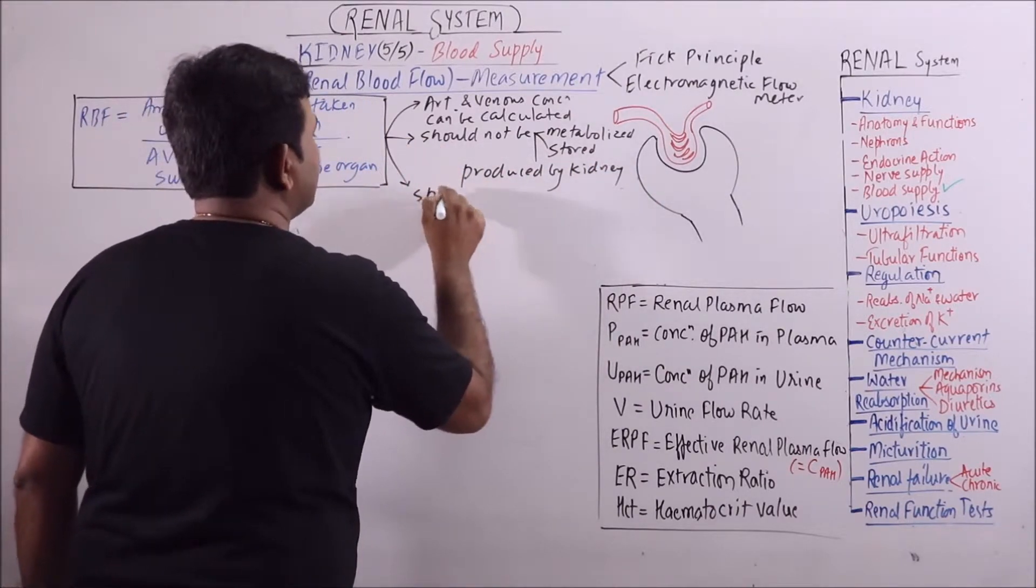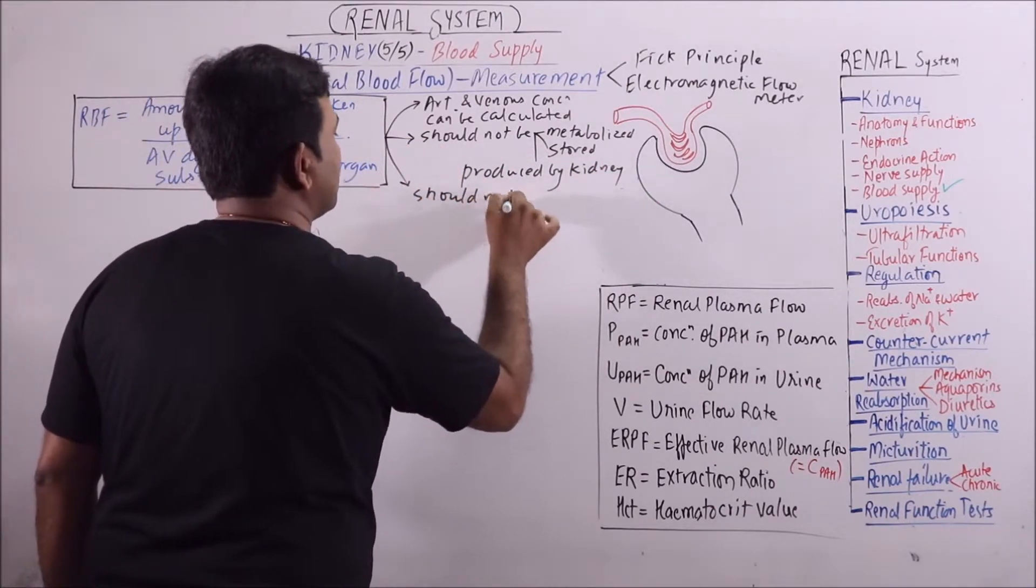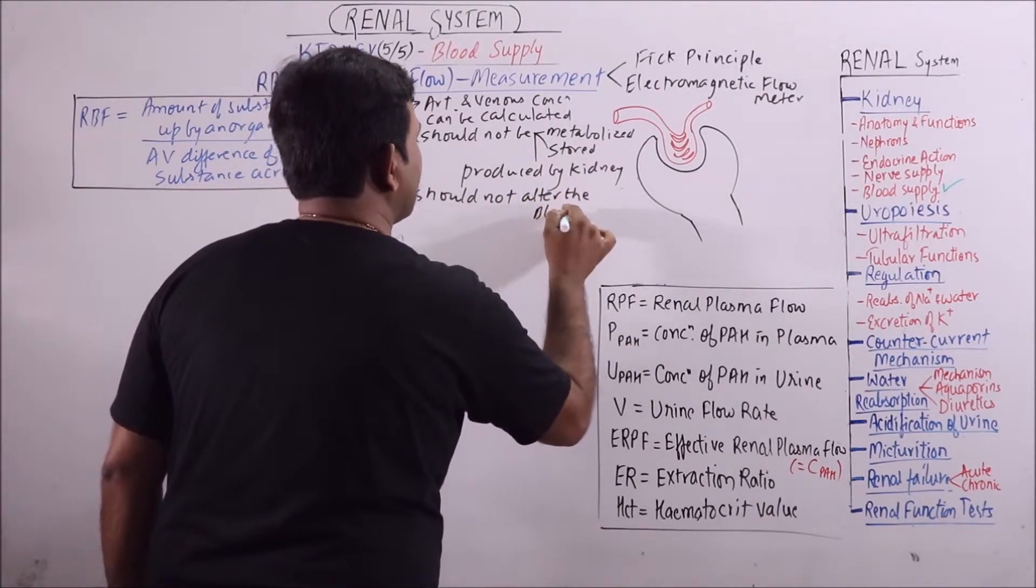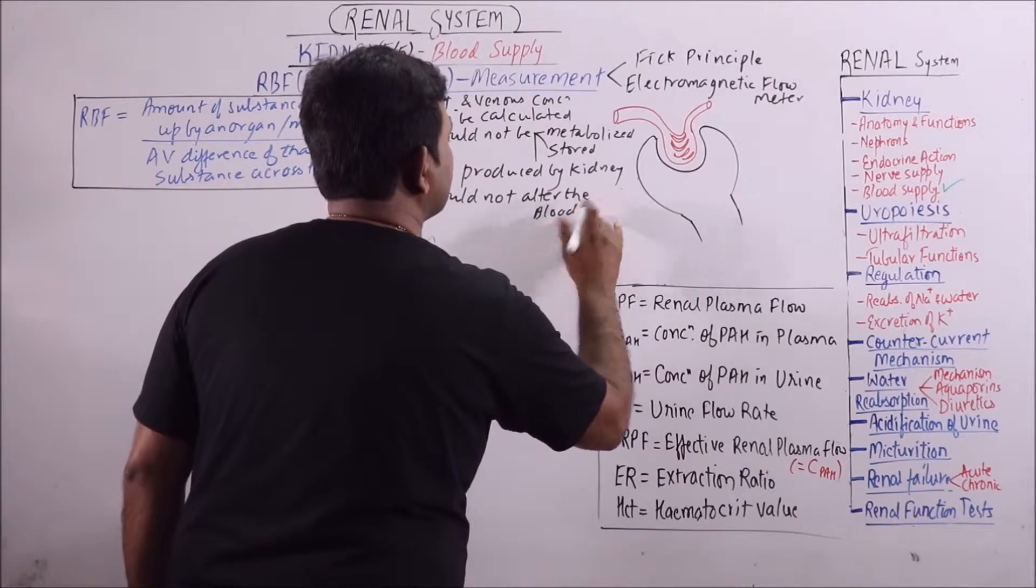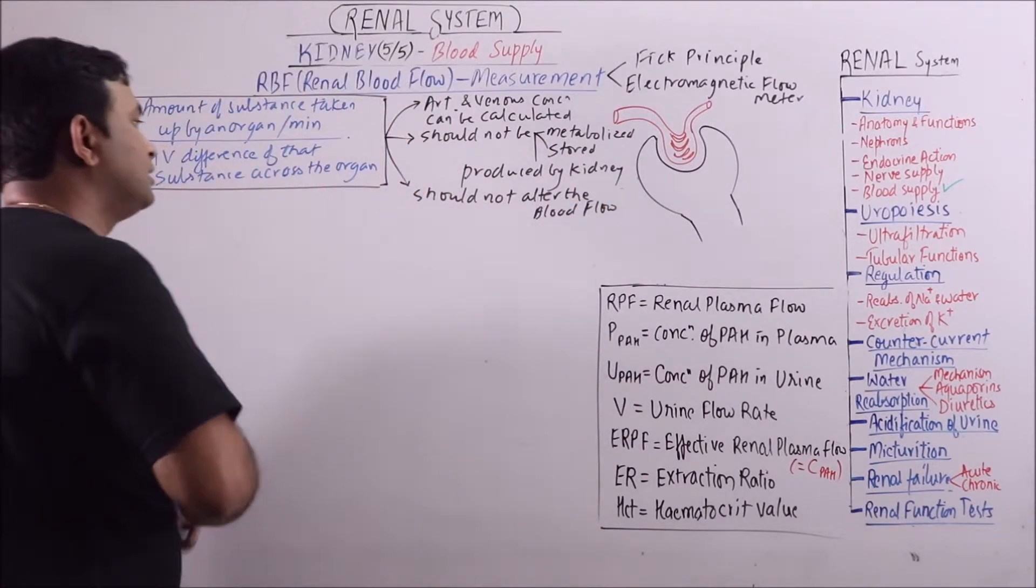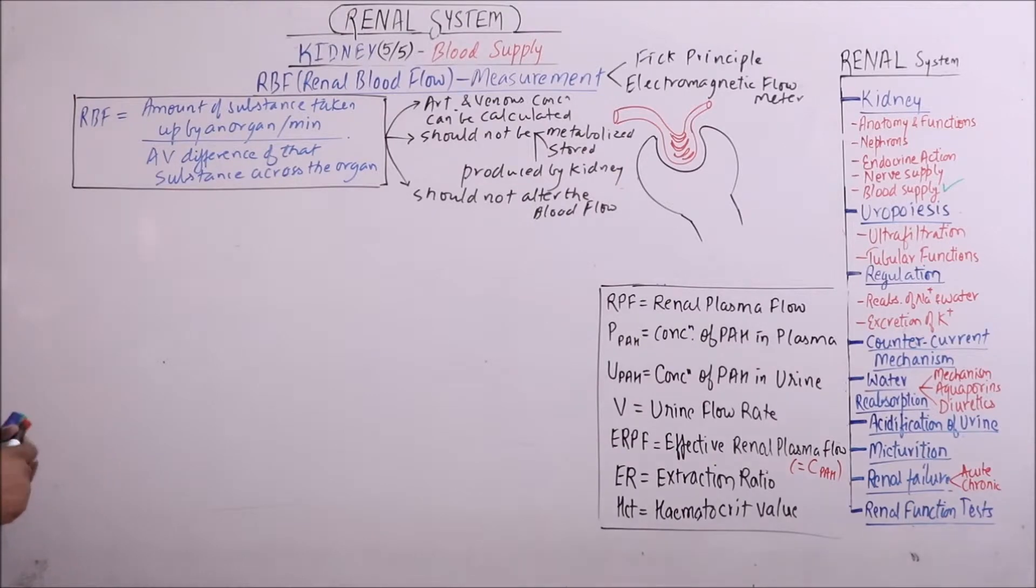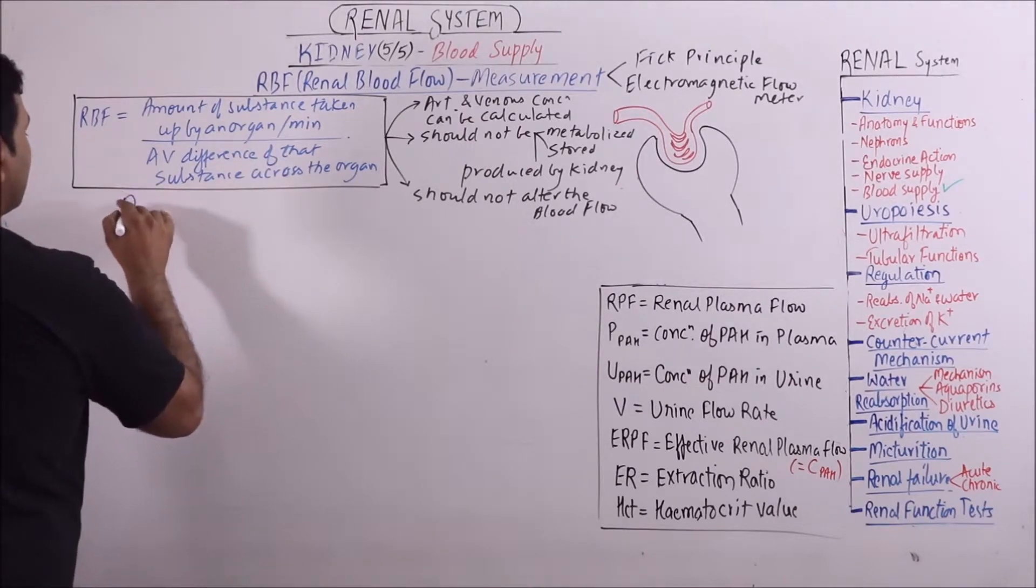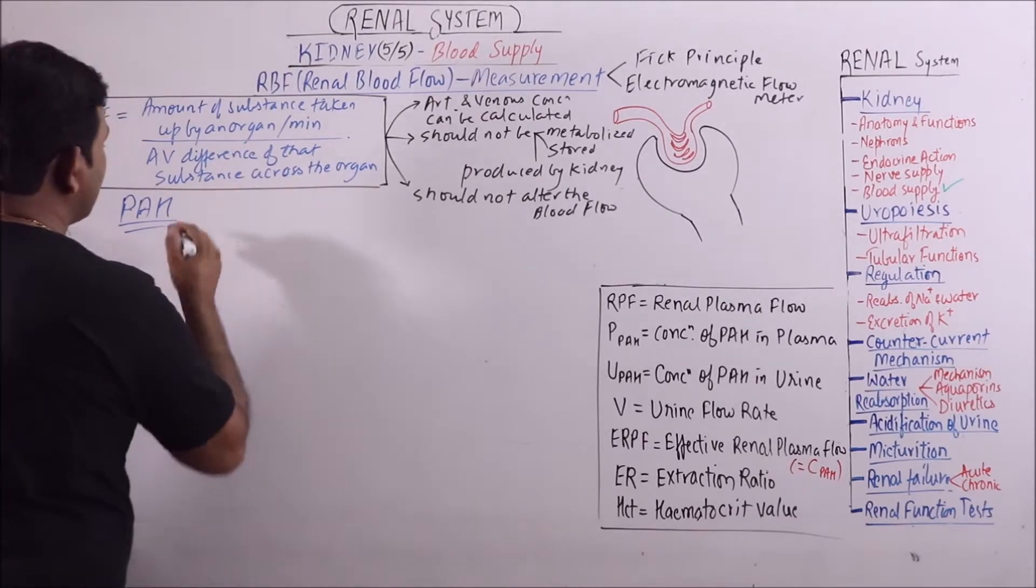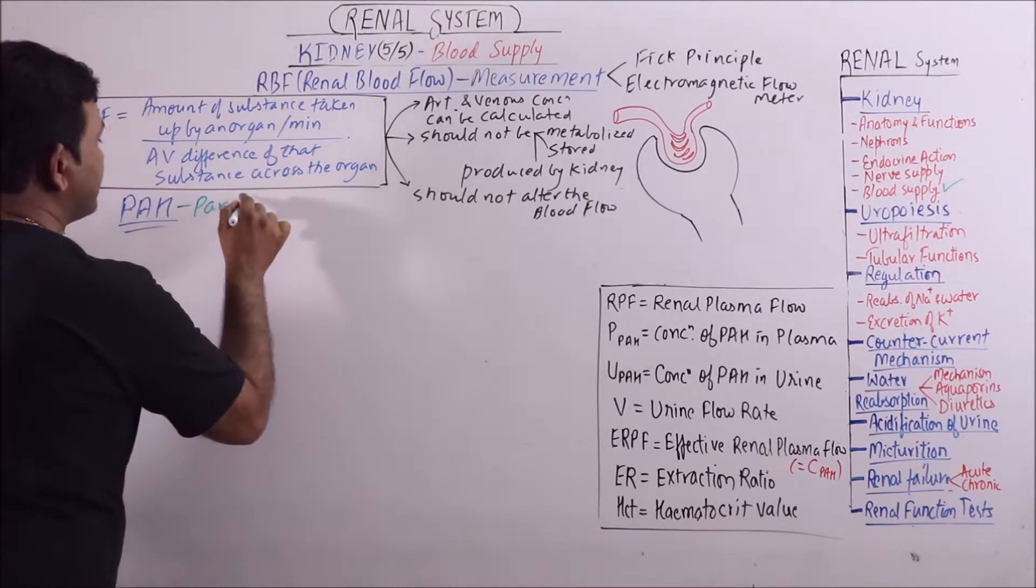Then it should not alter the blood flow. So these properties should be present in the substance which is to be taken for measurement of RBF by Fick principle. One such substance is PAH, that is para-aminohippuric acid.